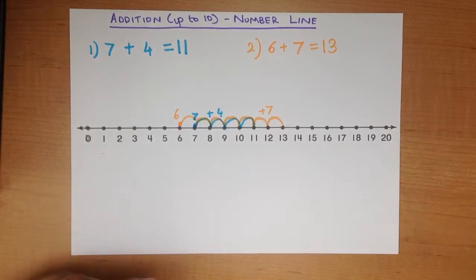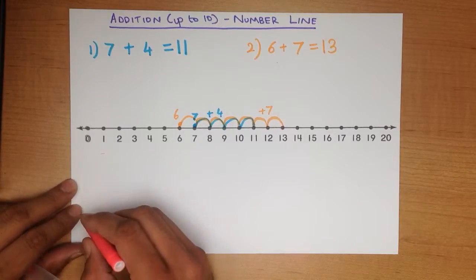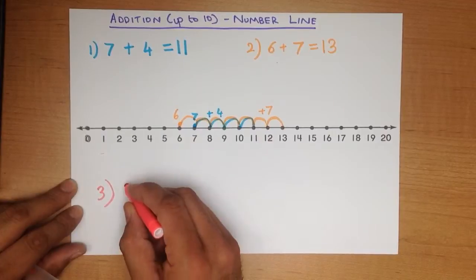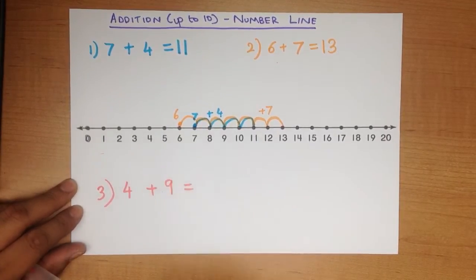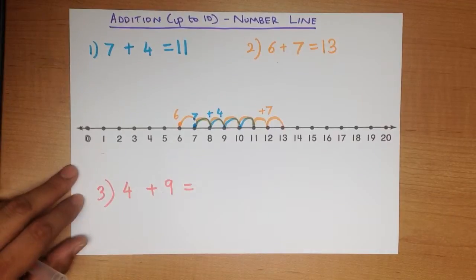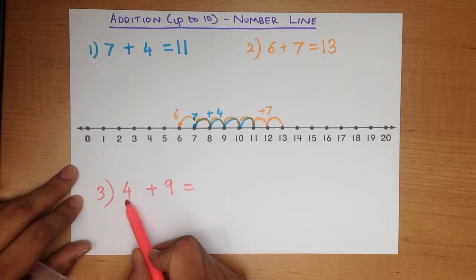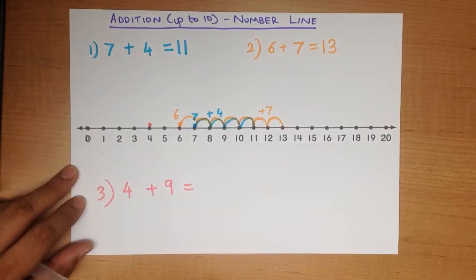Let's work through one more example. Let's write it over here. What is 4 plus 9? Now, do you remember what you have to do? You find the first number, 4. Let's just put a little pink dot there.